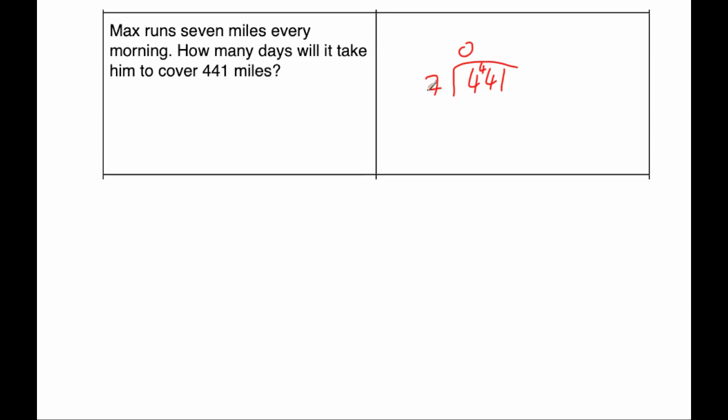44 divided by 7, well that's going to be equal to 6, 7 times 6 is 42. So that's going to be 6, remainder 2. And then 21 divided by 7 would be 3. So the answer would be 63 days.